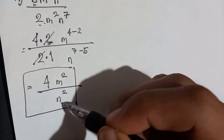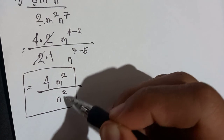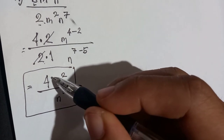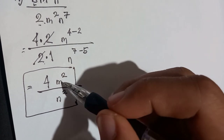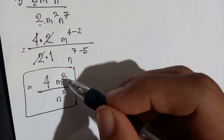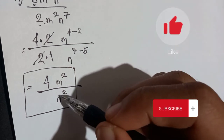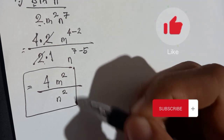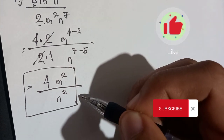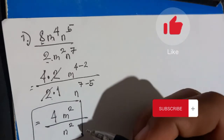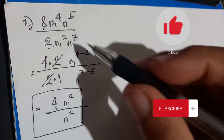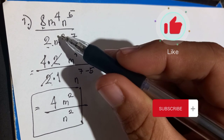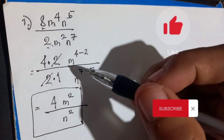Simplifying: 4 divided by 2 gives 4 (after cancelling), m⁴⁻² is m², and n⁷⁻⁵ is n². Since 4, m², and n² cannot be factored further, the final simplified answer is 4m²n² over n² — that is, 4m²n² over 1, which equals 4m²n². That is the simplified answer for this example.